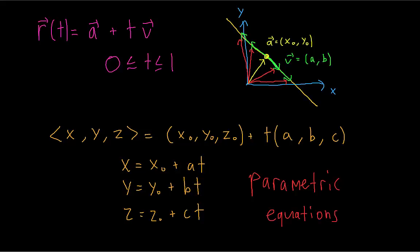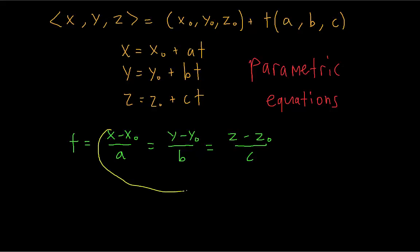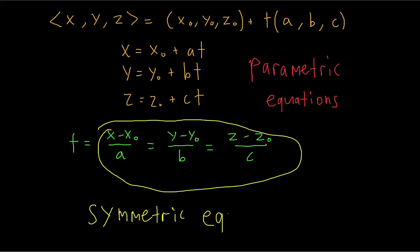There's one more system we can use to represent the line. Given a point on the line, there must be some single value of T that generates that point. For example, if the point (2, 3, 1) is on the line, there must exist some value of T that, when plugged into the vector equation, gives that point. It wouldn't make sense to plug in different T values for X, Y, and Z to generate a single point. Which means we can solve for T in each of the parametric equations and set them equal to each other. The three equations we get from doing this are called the symmetric equations of the line.